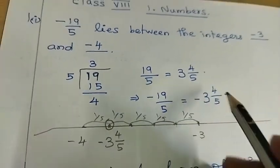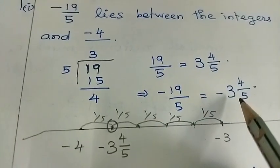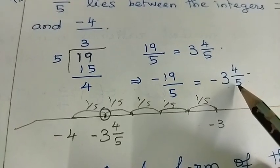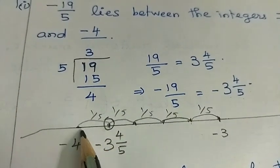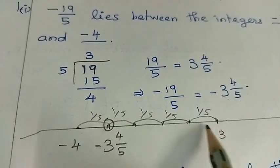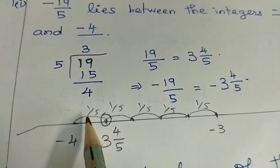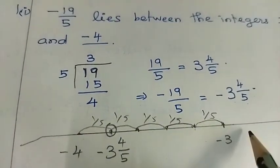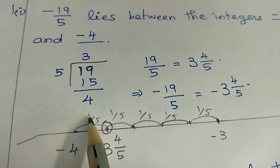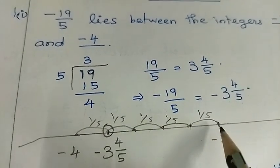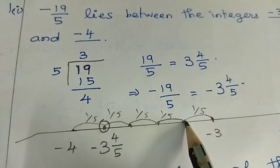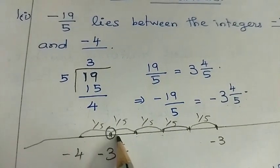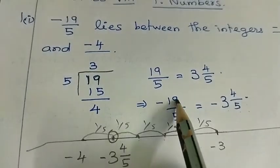That means minus 3, 4 by 5. Now, 5 is in the denominator. The range is minus 3 to minus 4 — that is the distance, divided into 5 equal parts. So the value of each part is 1 by 5. The points are: minus 3 and 1 by 5, minus 3 and 2 by 5, minus 3 and 3 by 5, minus 3 and 4 by 5. That is minus 19 by 5.